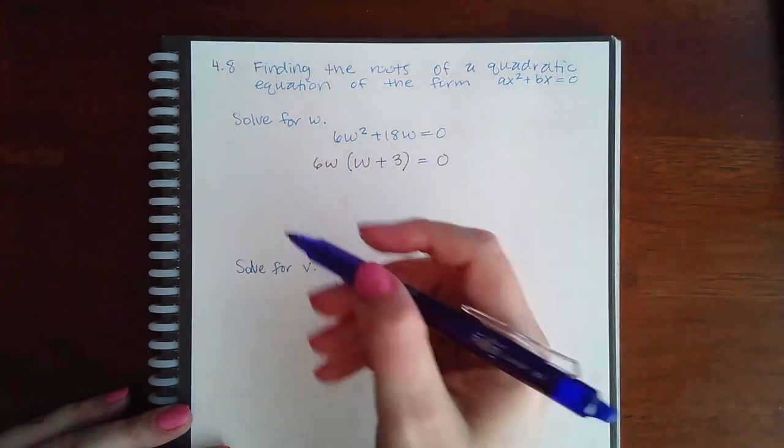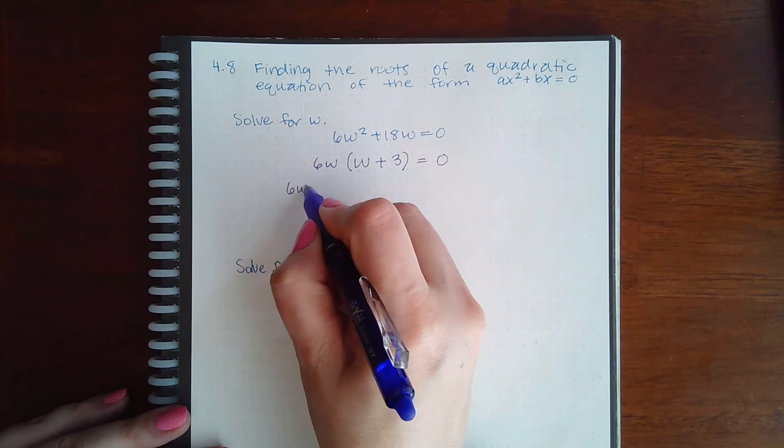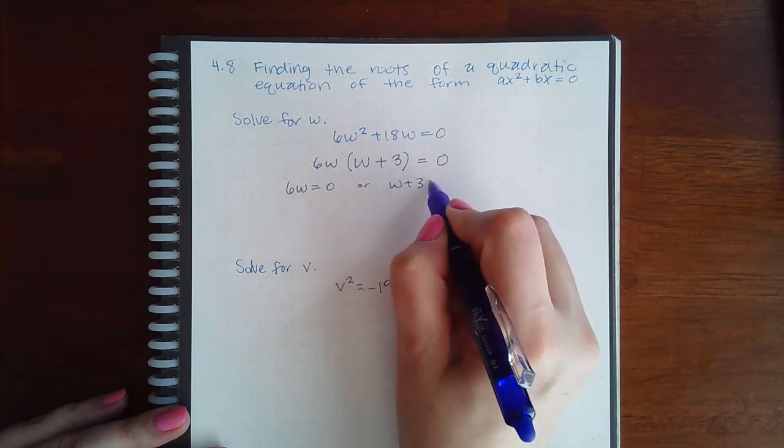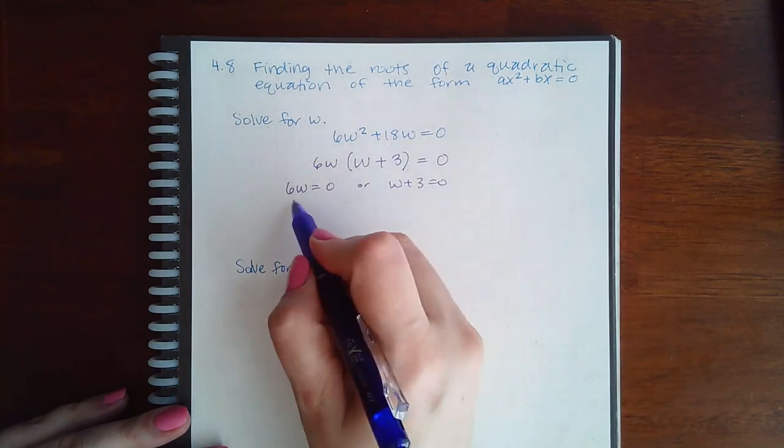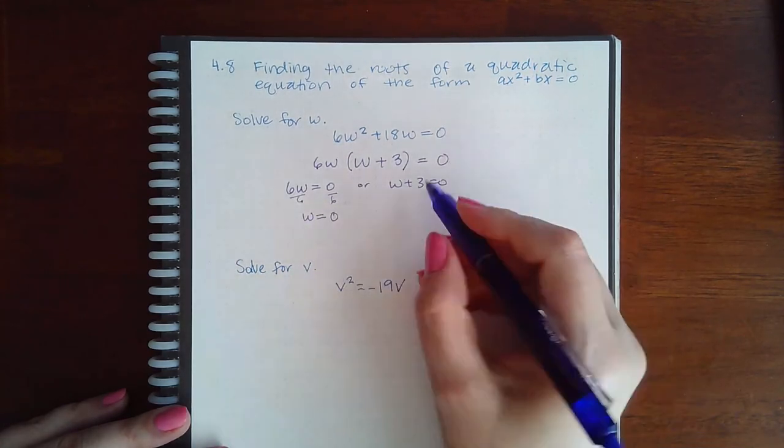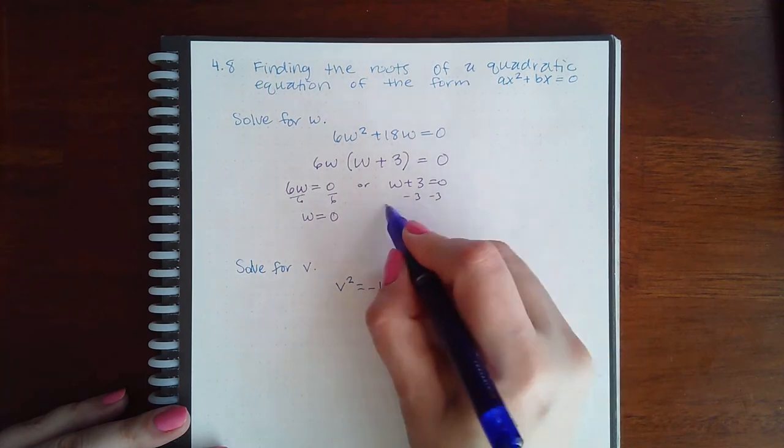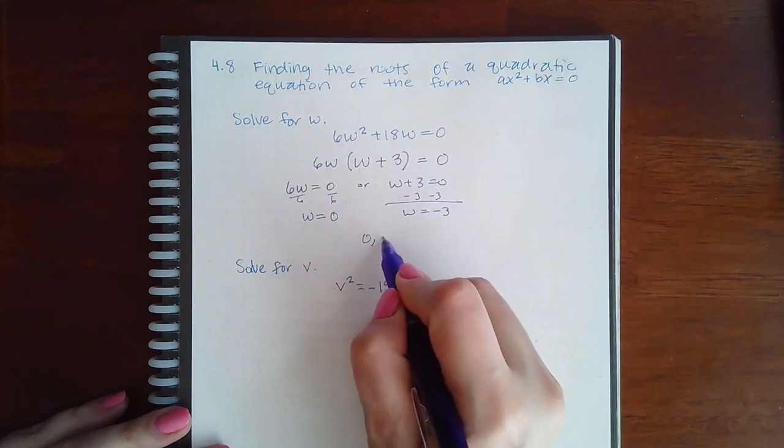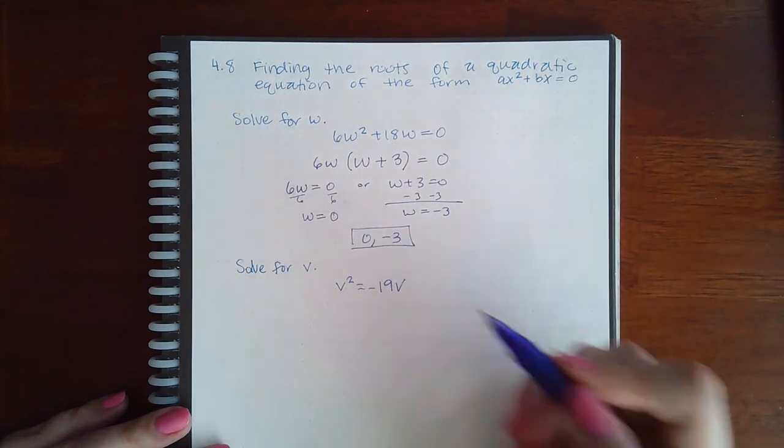Once you have this in its factored form, we know that this factor has to equal zero or this factor has to equal zero. If I solve this, if I divide by 6 on both sides, I get that w has to equal zero. If I minus 3 on both sides, I get that w has to equal negative 3. So we have two solutions, zero and negative 3.